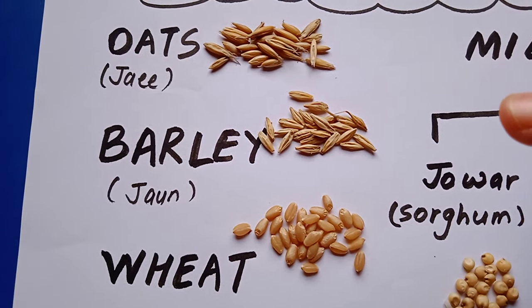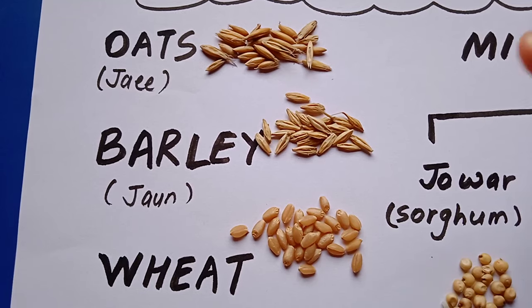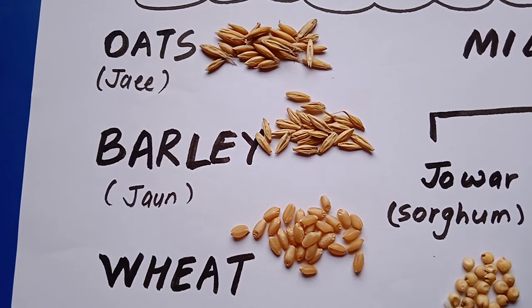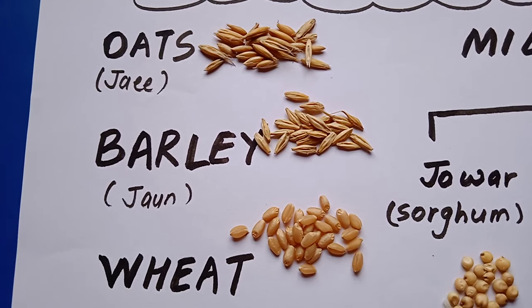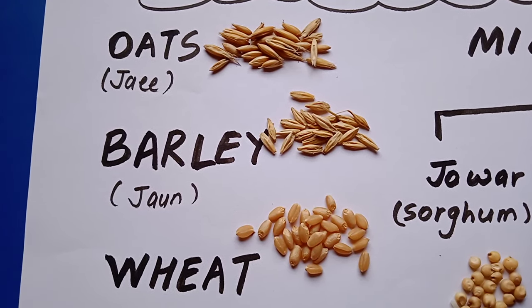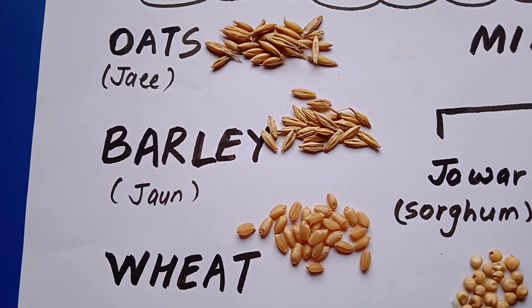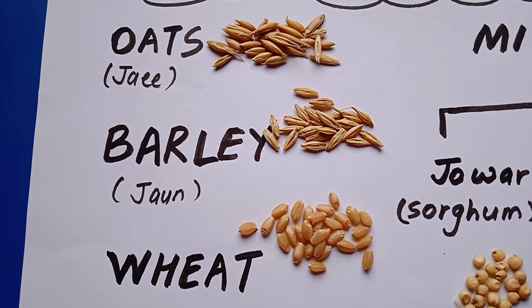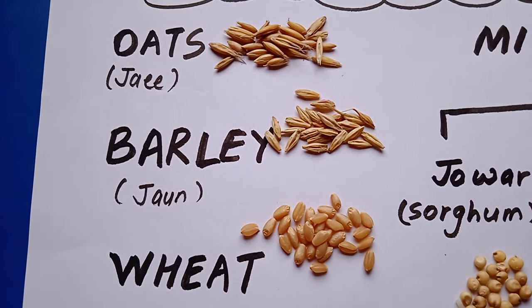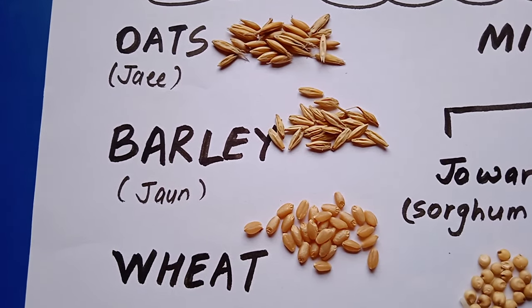Another important thing is that they are grown in the same season - they are grown in October-November months in India, and they are harvested in March-April. They require cool temperatures to grow.